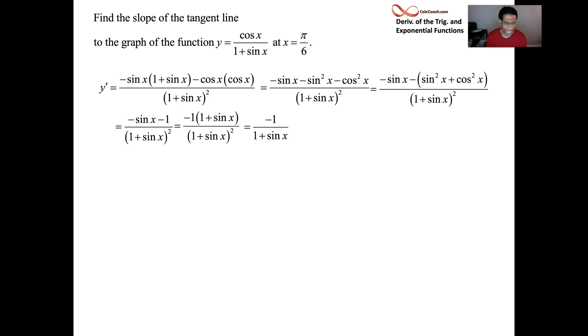Okay, and we're evaluating this derivative when x is π over 6. So the sine of π over 6, that's the 30 degrees, right, that's going to be a half. Negative 1 on top of 1 plus a half, so negative 1 on top of 3 halves. It's the same thing as saying negative 2 thirds. That's your tangent line slope.